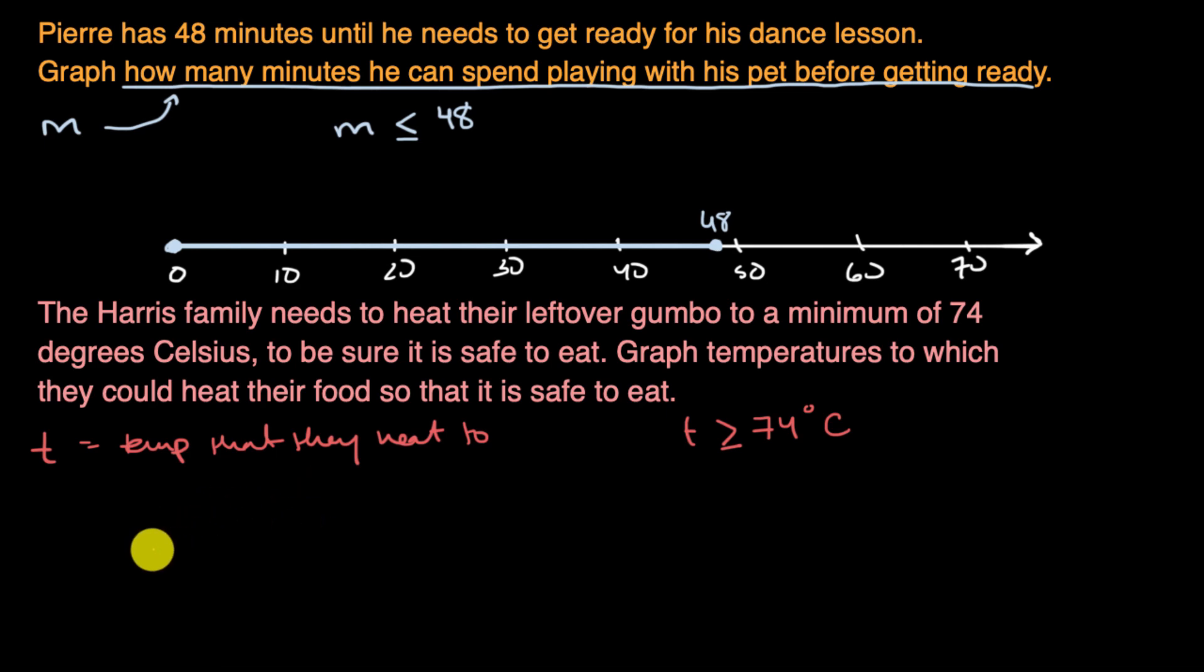But let's put this on the number line. And we can have negative temperature if we're talking about degrees Celsius. So let's say that this is zero degrees. This is 10, 20, 30, 40, 50, 60, 70.